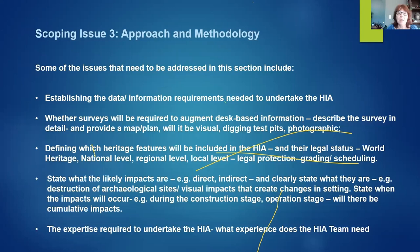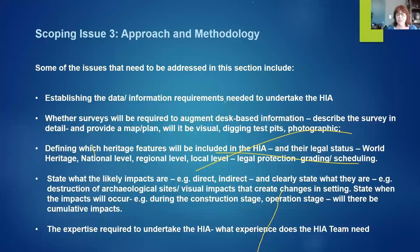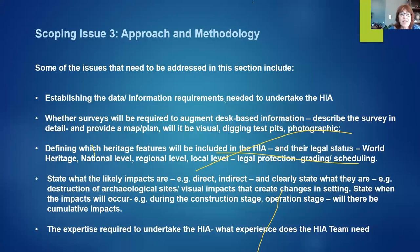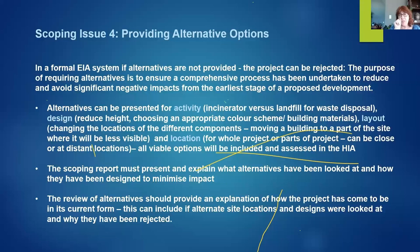For approach and methodology, we need to establish the data and information requirements needed to undertake the HIA — do we need surveys, test pitting, photographs, written documentation? Also define which heritage features will be included: are the heritage resources World Heritage, national level, regional, or local? Is there legal protection — are they graded or scheduled? State what the likely impacts are — direct or indirect — and clearly state what they are. Finally, identify the expertise required to undertake the HIA and what the HIA team needs.